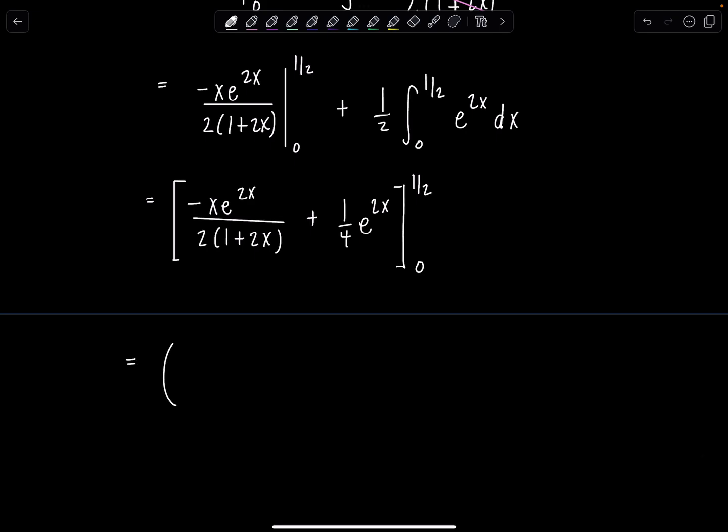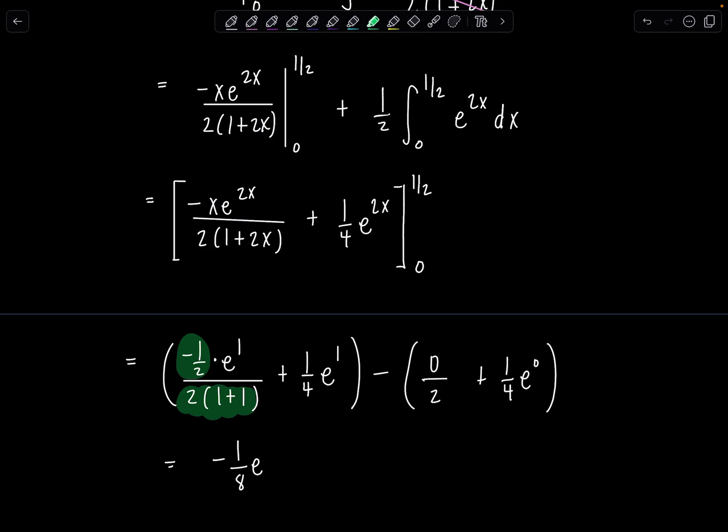Here we go. So upper limit is 1/2. We have here negative 1/2 times e to the 2 times 1/2, so e to the 1st, over 2 times (1 plus 2 times 1/2 is 1) plus 1/4 e to the 1st minus lower limit. If I plug in 0 for that first term, it's just going to be 0 over 2. So it's just a big 0 plus 1/4 e to the 0. Let's see. What do we got here? This is negative 1/2. And then I have 4 in the denominator. So that will end up being negative 1/8. And there's still that e to attach to it. So negative 1/8 e. Plus 1/4 e minus 0 minus 1/4 times 1.